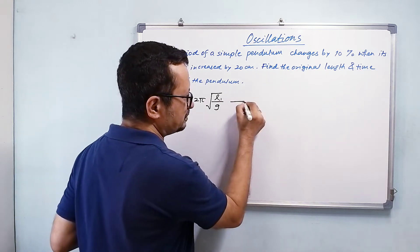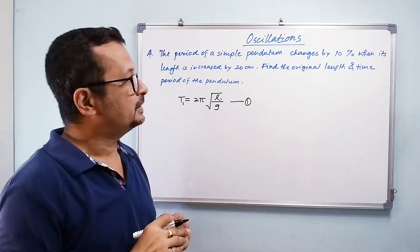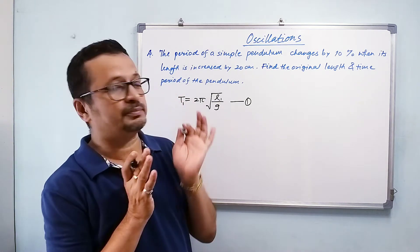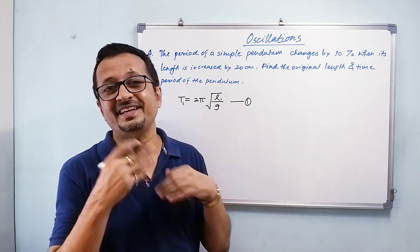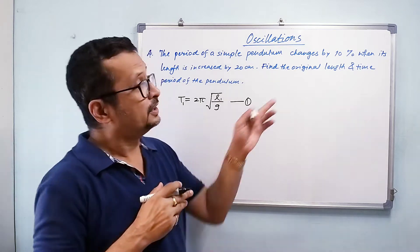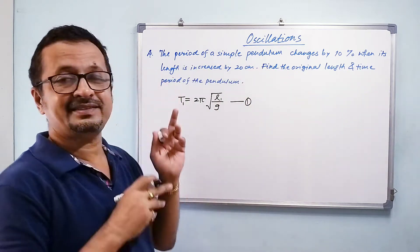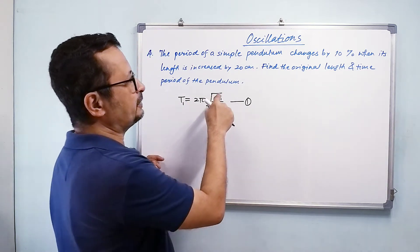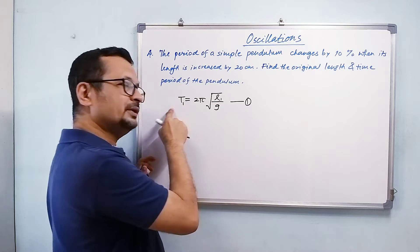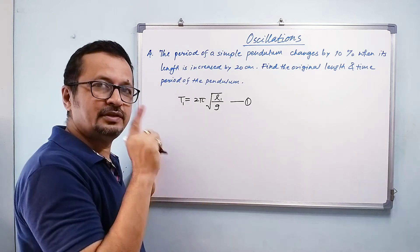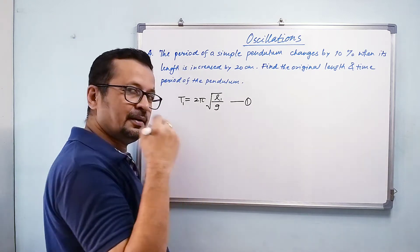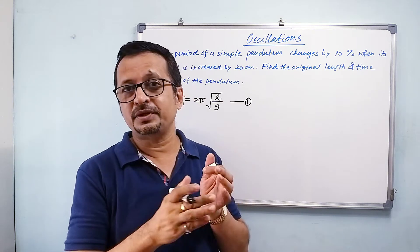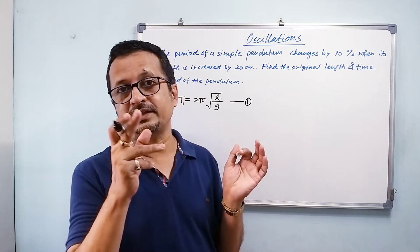Now they say the period changes by 10%. They have not said it increases or decreases, but they said its length is increased by 20 centimeters. If you look at the formula, if length increases, the time period increases. So on increasing the length, my time period will increase by 10%.